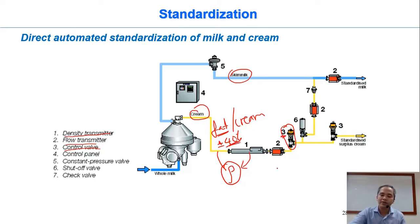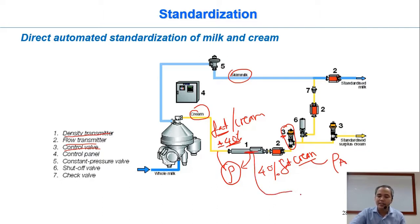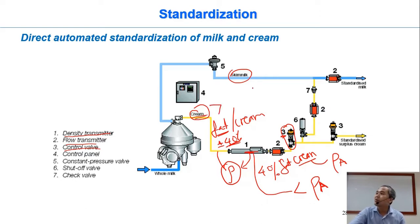Based on the density, they can adjust to have the right fat content by a control valve — number three. For example, cream with 40% fat has a certain density value A. So if this device measures the density and sees that it's lower than normal — lower than the fixed density — that means the fat content of the cream is higher than normal. If the fat content is higher than normal, this valve will open more to let more skim milk out.